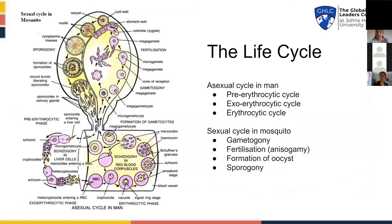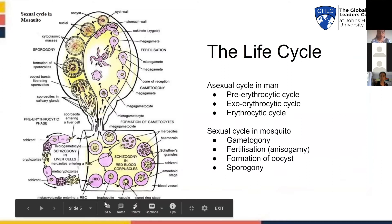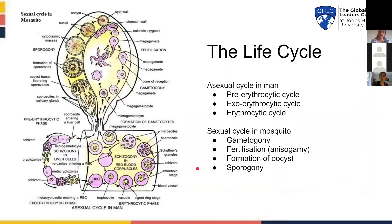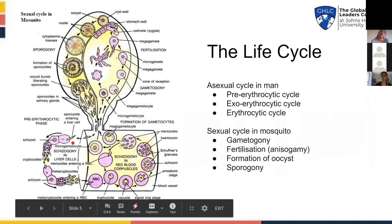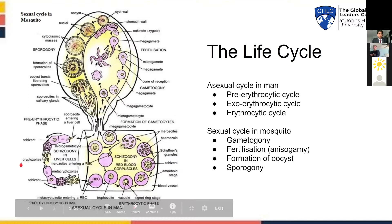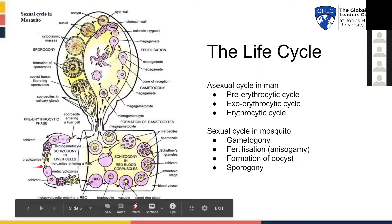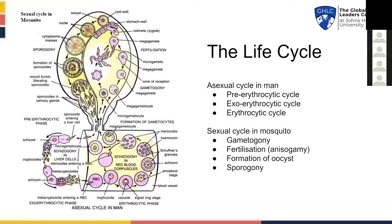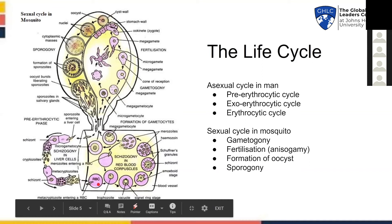Starting with the asexual cycle in man: when a mosquito takes a blood meal, it releases thousands of sporozoites into the blood, which then travel through the blood and are received by the liver. They enter into the reticuloendothelial cells of the liver and start feeding on the contents present in the cells. They undergo multiple fission to form structures called cryptozoites that then burst out of the liver cell, and either reinvade another liver cell, starting the exoerythrocytic cycle, or invade an RBC, starting the erythrocytic cycle.